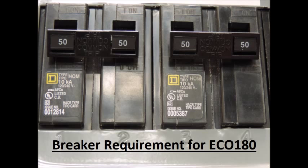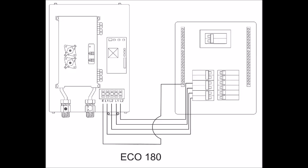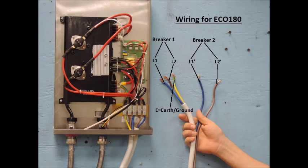Power for our ECO 180 must be supplied by two 220 volt double pole 50 amp breakers, giving the unit access to a total of 100 amps of possible power usage. Here is a simple line drawing of the power supply wiring for the ECO 180, and here is a real-world picture of the same model. Please note that each pair of L1 and L2 terminal connections should be wired to the same breaker.